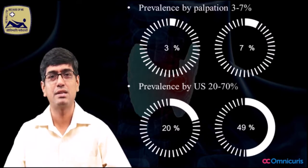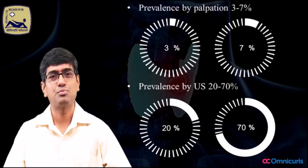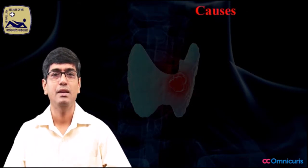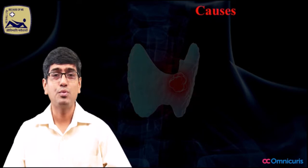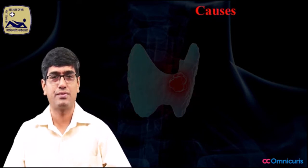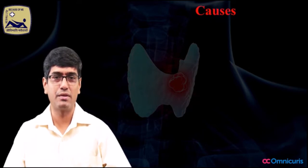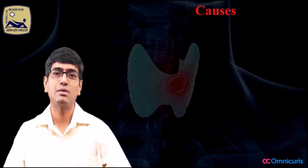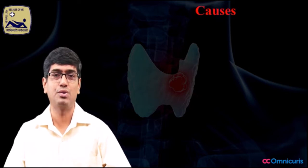There are studies which suggest that such prevalences might be even up to as high as 70%. Now that we know the varying range of thyroid nodule prevalence, let us look at the possible causes of thyroid nodule.